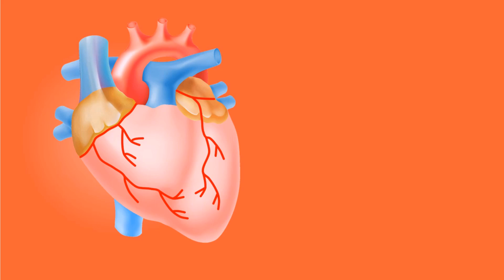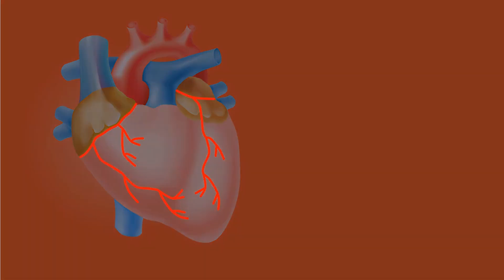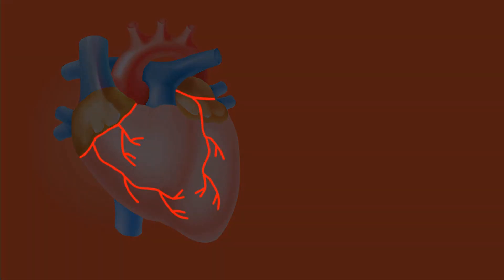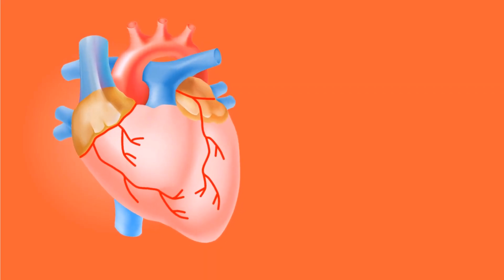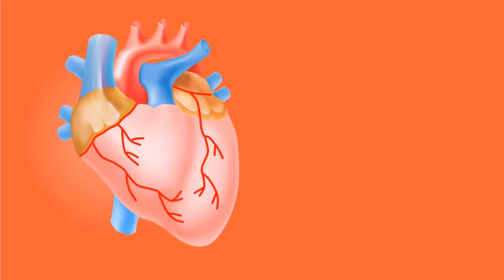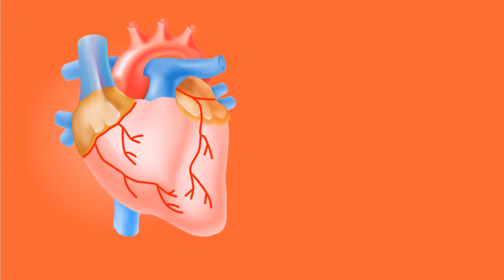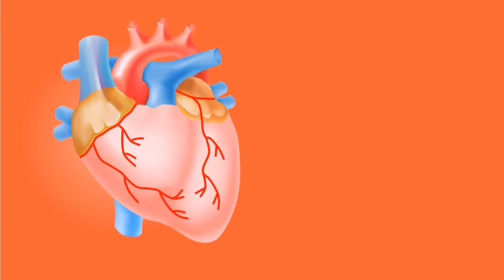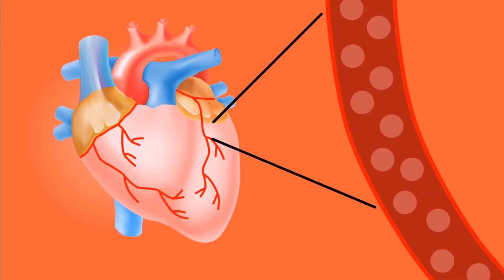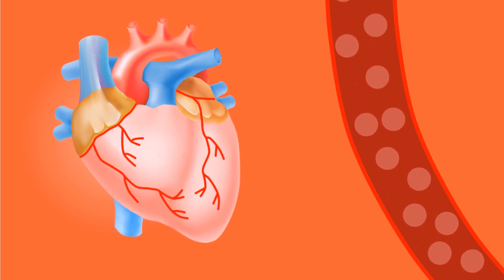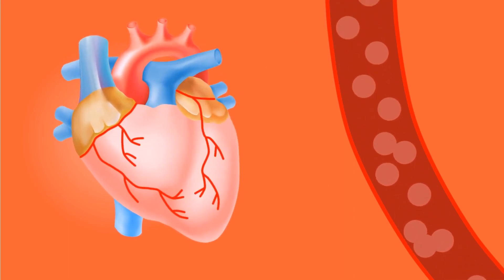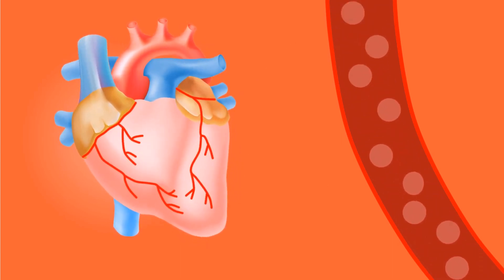Heart attack is usually due to sudden blockage of a blood vessel supplying oxygenated blood to the heart, known as a coronary artery. Sudden blocks are usually due to the formation of a blood clot within the coronary artery. Clots could form over a pre-existing partial block due to fat deposition.